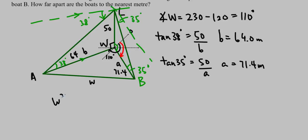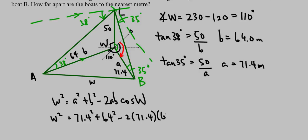So now I have 71.4 meters here. I have 64 meters here. And I have 110. So I have a side angle side, which means I can use my cosine law. So W squared equals A squared plus B squared minus 2AB cos W. Fill in the values. W squared equals 71.4 squared plus 64 squared minus 2 times 71.4 times 64 cos 110 degrees. Don't forget to put the degrees. And you type it all into your calculator and you should get that W is approximately 111.0 meters.